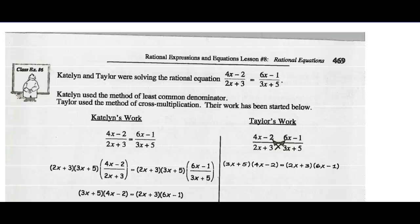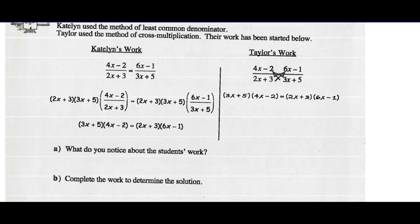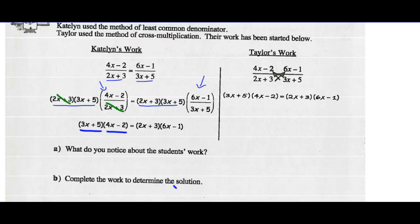Caitlin and Taylor were solving the rational equation: 4x minus 2 over 2x plus 3 equals 6x minus 1 over 3x plus 5. Caitlin used the method of least common denominators. She found the common denominator to be 2x plus 3 times 3x plus 5, multiplied each term by it, and the 2x plus 3 reduced, leaving 3x plus 5 times 4x minus 2 on one side, and 3x plus 5 reduced on the other, leaving 2x plus 3 times 6x minus 1.